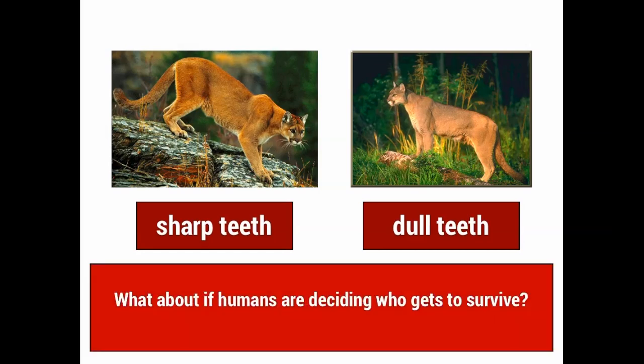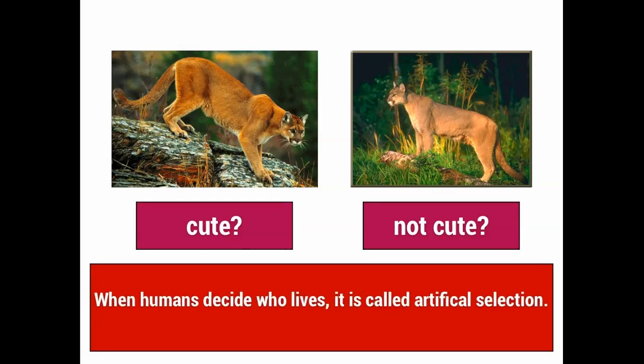On the other hand, what if humans were deciding which cougars get to survive? We probably wouldn't decide based on the sharpness of their teeth. Rather, humans have a tendency to choose things based on cuteness. Let's say one cougar is really cute, and one cougar was really not cute. Humans have always chosen the animals that are cute. So when humans decide who lives, it's called artificial selection, because we're not deciding based on whether a cougar can survive in the wild — we're deciding based on whether we think a cougar is cute.